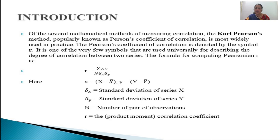What is the formula used for calculating Carl Pearson's Coefficient of Correlation? R equals summation xy divided by n into standard deviation of x into standard deviation of y. Here, small x means x minus x̄, small y means y minus ȳ. Then n is the total number of observations, and we also need to calculate the standard deviation of x and the standard deviation of y.